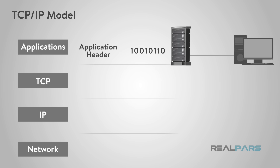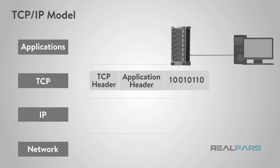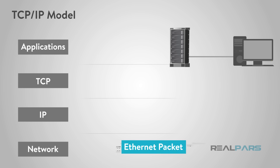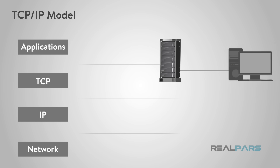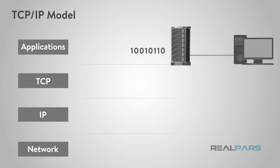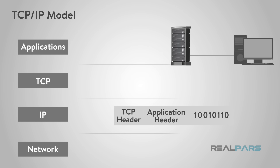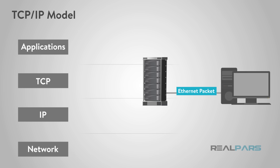These data move up and down the stack or layer continuously, getting packed, unpacked, headers and info added, deleted, etc. So through this TCP/IP protocol explanation, you learn that the transmission of the data results in an Ethernet packet.